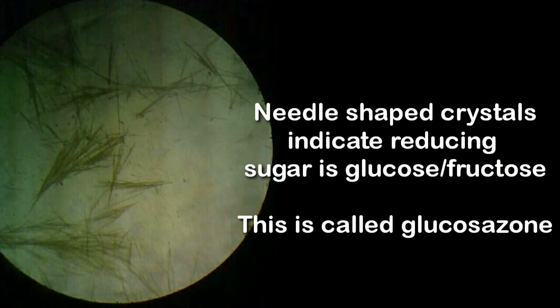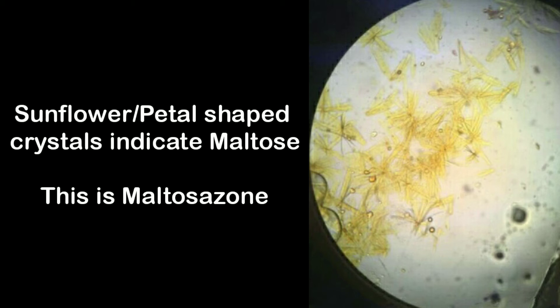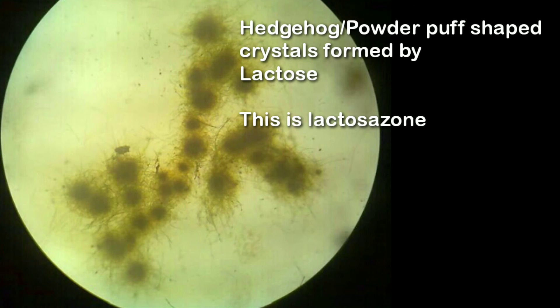The following are the images which I captured using my microscope. The needle-shaped crystals indicate the reducing sugar is glucose or fructose. In the next figure you see sunflower or petal-shaped crystals indicating the presence of maltose. And the last figure is lactose forming hedgehog or powder puff shaped crystals.